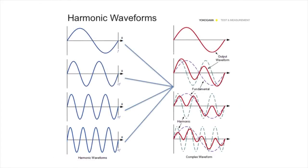When the fundamental and harmonic waves are combined, distortions will occur in the waveform and interferences will occur in the equipment connected to the power line.